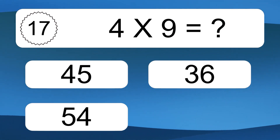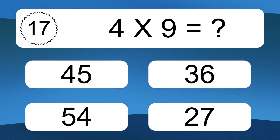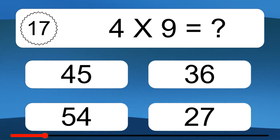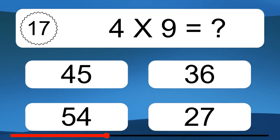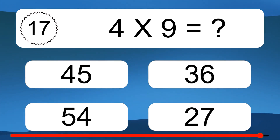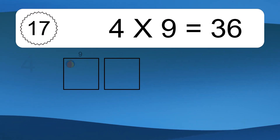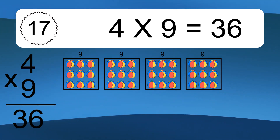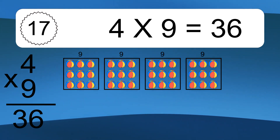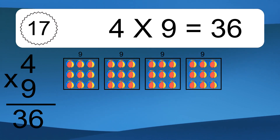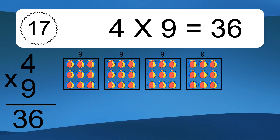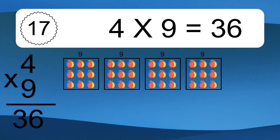4 times 9 equals what? 4 times 9 equals 36. We have 4 boxes, and each box has 9 colorful balls inside. If you count all the balls in all the boxes together, you will have 4 times 9 balls. This equals 36 balls.